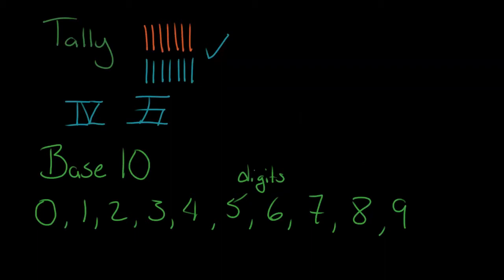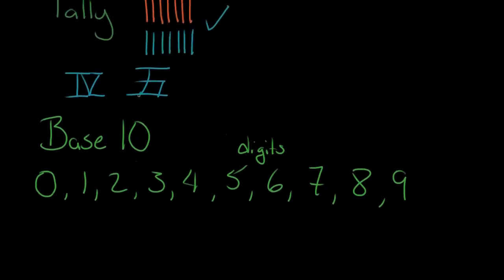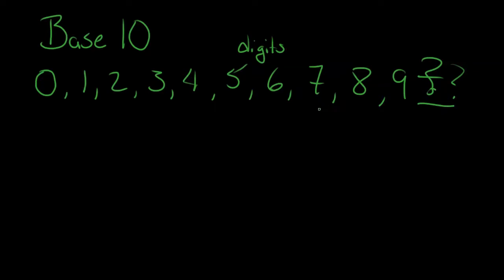When people first started counting in base 10, they realized that writing tally marks or Roman numerals can be bothersome and takes a lot of time. So in base 10 they came up with a way to shorten it — every one of these digits gets reused again and again, and they made them simple enough to write quickly. We call it base 10 because we have 10 fingers, but we've only got nine digits here. When we get to the 10th thing, we don't want to make a new symbol for 10.